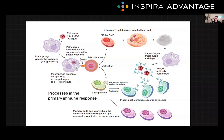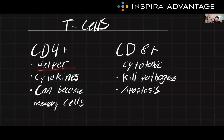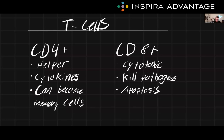Cytotoxic immunity is mediated by T lymphocytes, known as T cells. There are two main types of T cells: CD4+ or T helper cells, and CD8+ or cytotoxic cells. CD4+ T helper cells coordinate the immune system by releasing cytokines and activating other immune cells, such as macrophages and B lymphocytes. They also play a role in the regulation of immune responses by differentiating into different subsets of T helper cells. CD8+ cytotoxic T lymphocytes directly target and eliminate infected cells by releasing cytotoxic molecules and triggering apoptosis, a process of programmed cell death. You can think about the difference as CD4+ cells indirectly help eliminate an infection, whereas CD8+ cells are directly responsible for killing pathogens.